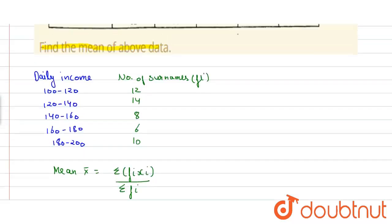So first we have to find xi and fi xi. So xi is 100 plus 120 upon 2 which is equal to 110, and 120 plus 140 upon 2 which is equal to 130. Similarly 150, 170 and 190.